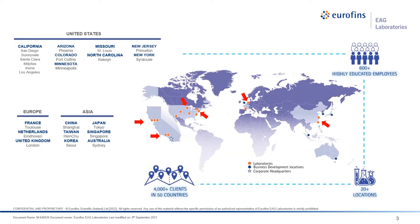EAG Laboratories is part of the Eurofins network of labs. Our expertise focuses within the realm of materials analysis and specifically surface characterization. We offer advanced imaging capabilities across all of our locations in the United States, Shanghai, Europe, and the rest of Asia. EAG is a team of several hundred employees, most with advanced degrees, and our state-of-the-art equipment and breadth of expertise lets us help you do your best work.